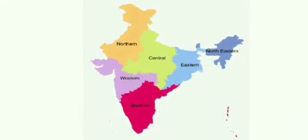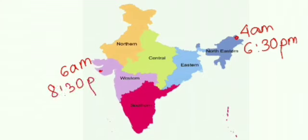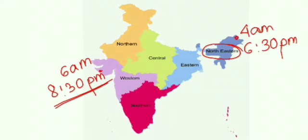Let's understand local time as well as standard time. We have already discussed in the last video that if there is sunrise at 4 a.m. in Arunachal, there will be sunrise in Gujarat after two hours, that is at 6 a.m. Also, if there is sunset in Arunachal at 6:30 p.m., then in Gujarat there will be sunset at 8:30 p.m. So in the north-eastern region it is almost dark everywhere, but the western regions are just having sunset at 8:30 p.m.